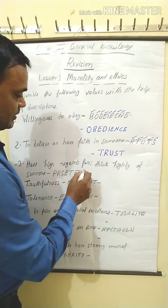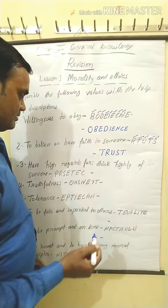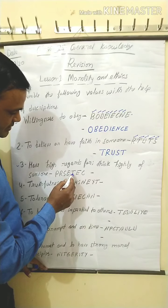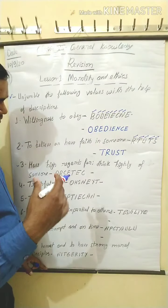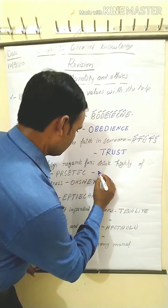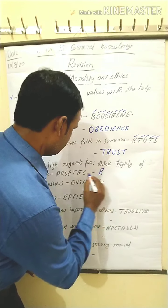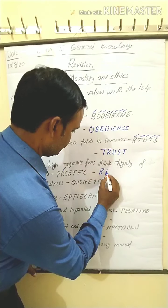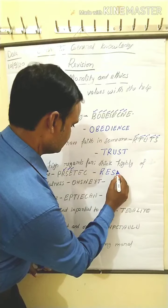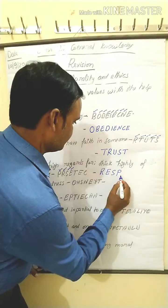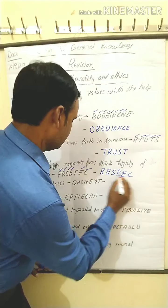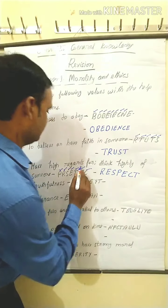Next, number three: have high regard for, think highly of someone. The jumbled letters given are P-R-S-E. You know that to have high regard means respect. The correct unjumbled word is Respect.